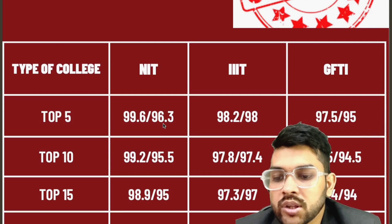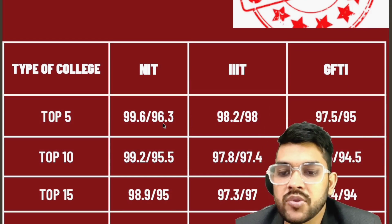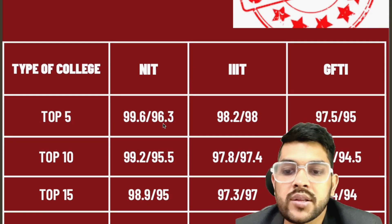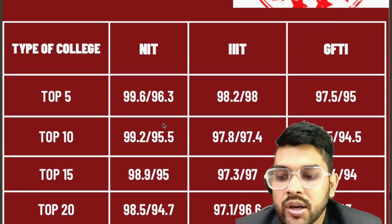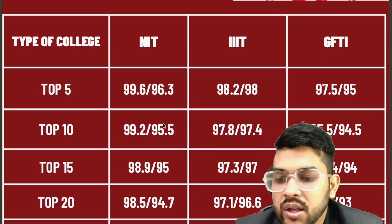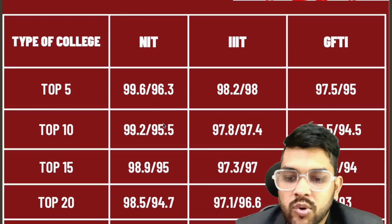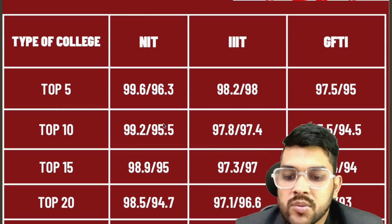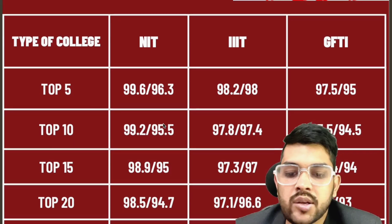For top 15 NITs: 98.9 for CSE and 95 for lower branches. For top 15 IIITs: 97.3 for CSE and 97 for lower branches. For top 15 GFTIs: 94.4 for CSE and 94 for lower branches. For top 20 NITs: 98.5 for CSE and 94.7 for lower branches. For top 20 IIITs: 97.1 for CSE and 96.6 for lower branches. For top 20 GFTIs: 94 for CSE and 93.4 for lower branches.